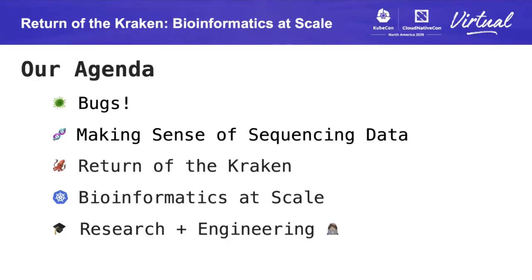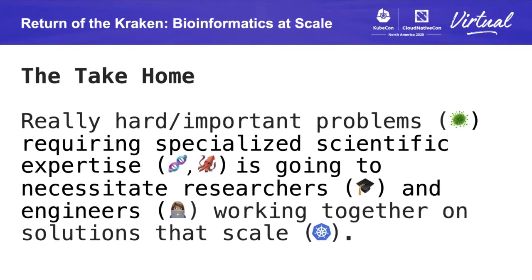Here's where we're headed today: we're first going to lay some basic groundwork around microbiology and sequencing data, then talk about Kraken — both the complex technical problem it's trying to solve and why Kraken is tough to scale — and finally we'll discuss leveraging Kubernetes to run Kraken at scale. This leads us into our primary takeaway, which is not a technical takeaway. It's the recognition that some of our most complex and important scientific and healthcare problems, which require specialized scientific expertise, are going to necessitate researchers and engineers working together.